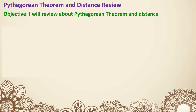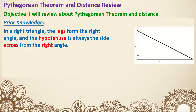First, let's review right triangle knowledge. In a right triangle, the legs form the right angle — so A and B are the legs. The hypotenuse is always the side across from the right angle, and this side is called the hypotenuse.